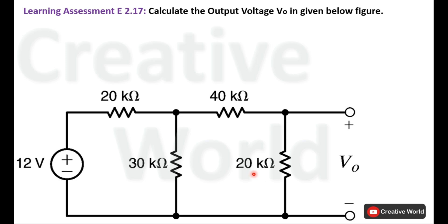This circuit has only a single voltage source. First we will reduce the circuit to calculate the total current, then use the current divider rule to find the current in the branch of interest, and finally calculate the voltage across the 20 kilo ohm resistance.